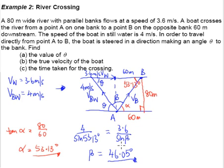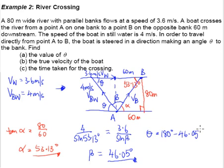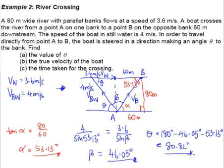Why is beta important? Because now that we have beta equals 46.05 degrees and the other angle is 53.13 degrees, we can find theta. The angles in the triangle must sum to 180 degrees, so theta equals 180 minus 46.05 minus 53.13, which gives theta equal to 80.82 degrees. That is the answer for part A.